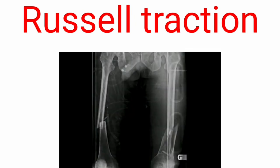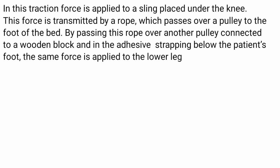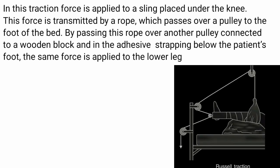Russell traction is used for the treatment of fractures of the femur. In this traction, force is applied to a sling placed under the knee. This force is transmitted by a rope which passes over a pulley to the foot of the bed. By passing this rope over another pulley connected to a wooden block and the adhesive strapping below the patient's foot, the same force is applied to the lower leg.